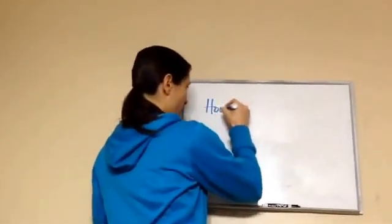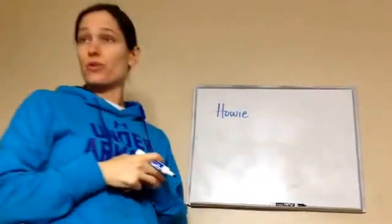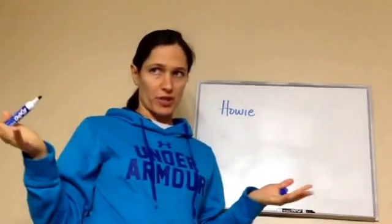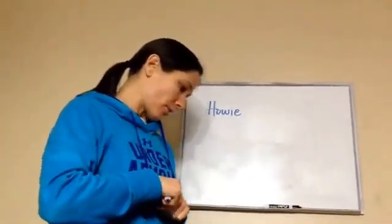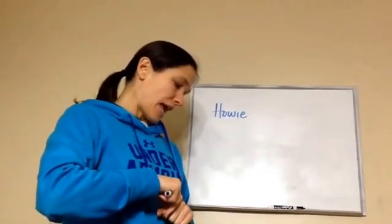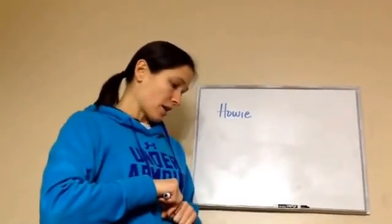Listen to this problem. Howie is five years older than Robert. Robert is three years older than Sally, and Sally is 15 years old. How old is Howie?